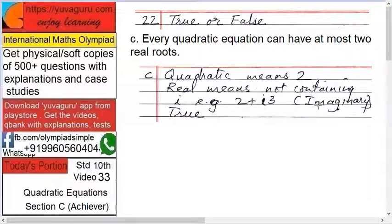Here, how are imaginary numbers shown? 2 plus i3, that is an imaginary number. These imaginary numbers cannot be shown on the number line, and real numbers can be shown on the number line. So, this statement is true.